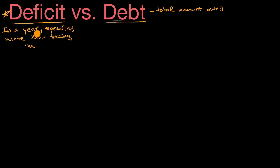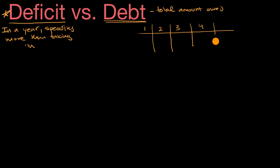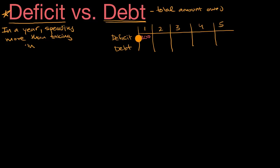Now these are clearly related. Let's make a hypothetical government. Say year one through year five — we'll think about the deficit each year and the debt each year. In year one, our hypothetical country overspends by 200 billion dollars. We run a 200 billion dollar deficit. Well, assuming the debt was zero before that, we're now going to owe people 200 billion dollars.